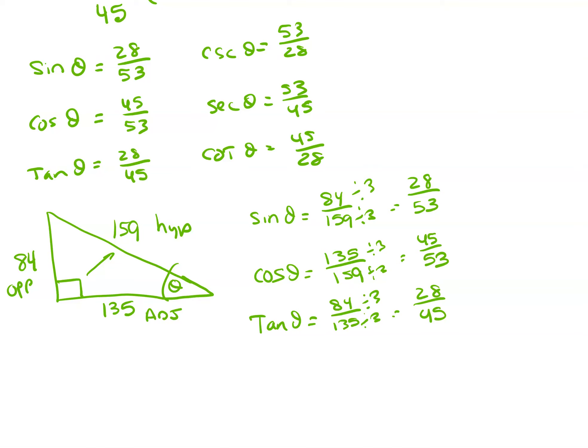So opposite over hypotenuse for sine. So it's going to be 84 over hypotenuse, 159. These both divide by 3, so I will reduce them to be 28 over 53. Notice it's the exact same thing I ended up getting up here.